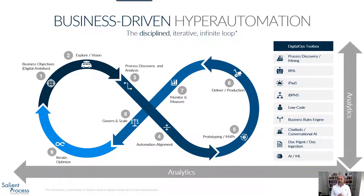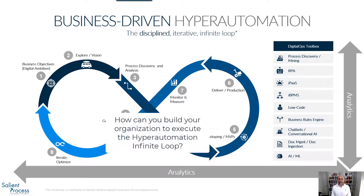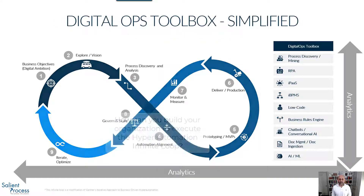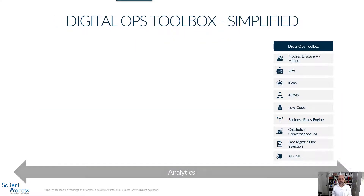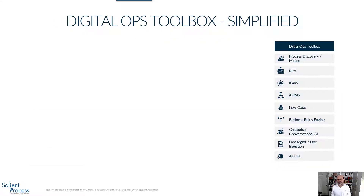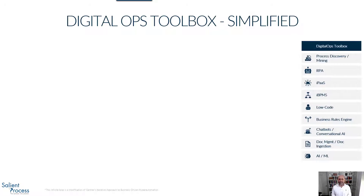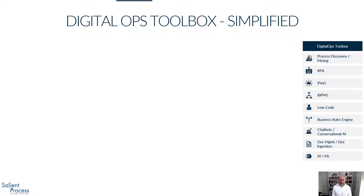What we're going to talk about today is the organizational side of executing the hyperautomation infinite loop. But before we define the organization, let's look at how automation is done today, leveraging the tools from the digital ops toolbox. If we were to describe each of the components of the digital ops toolbox in layman's terms, it would probably look something like this.